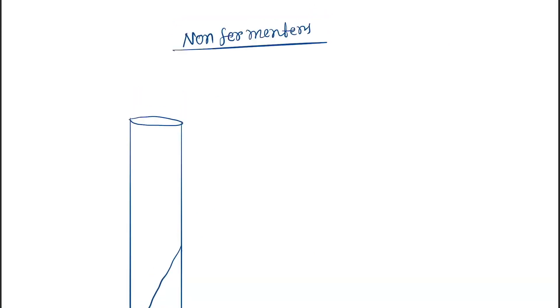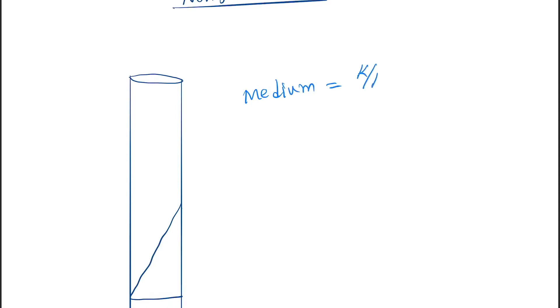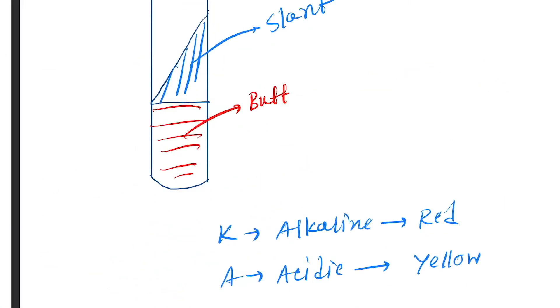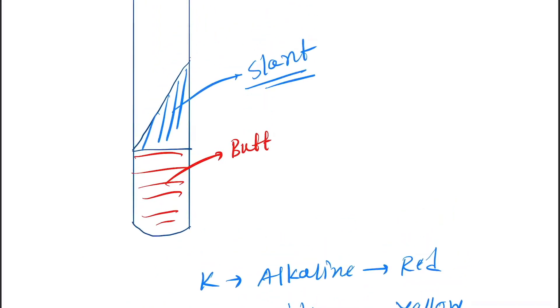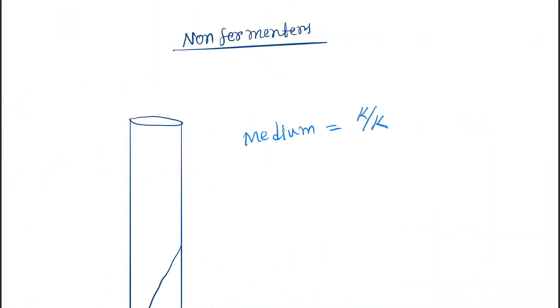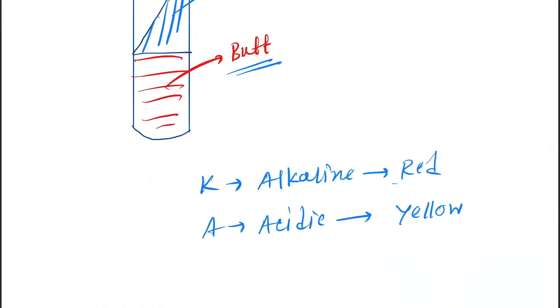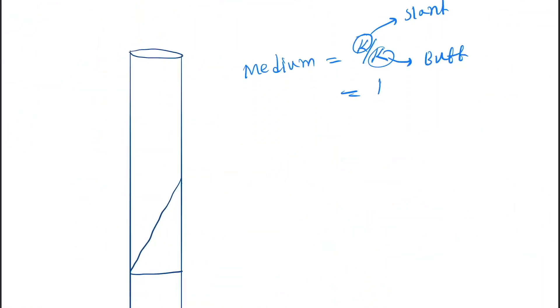Now let's discuss everyone one by one in detail. First is the non-fermenter. Here the medium will appear like K by K. As I told you earlier, slant is written first and butt is written below. So here K is slant and K is butt. The color will be red by red. Now see the color: red by red. This is also called TSI negative.